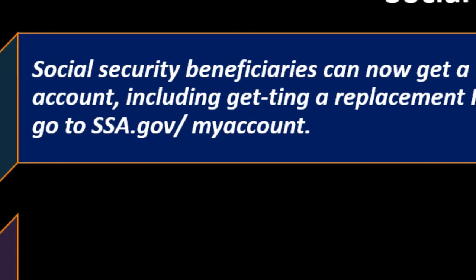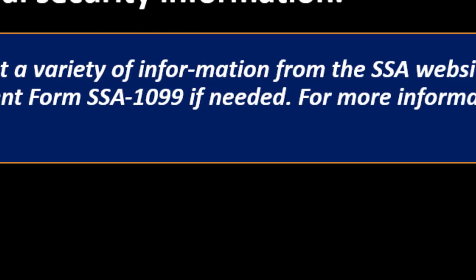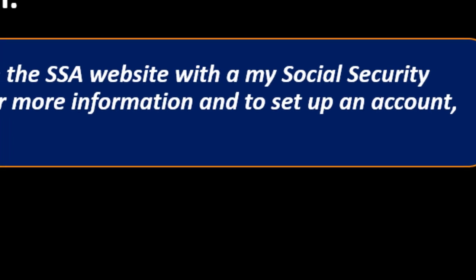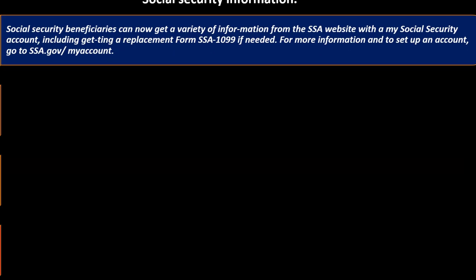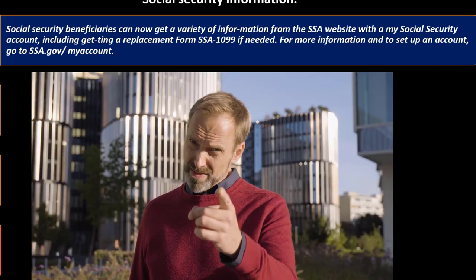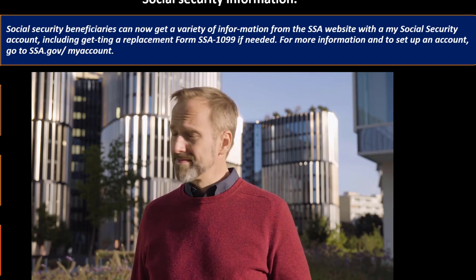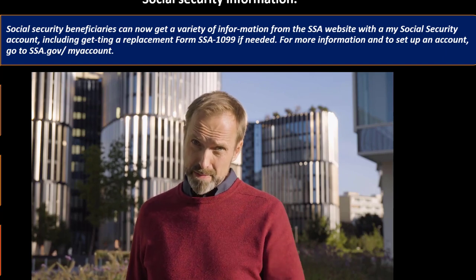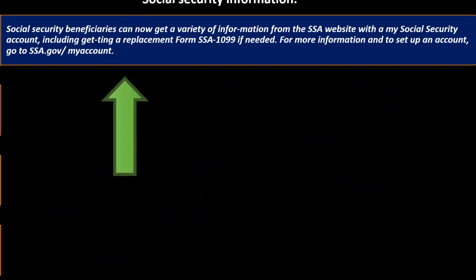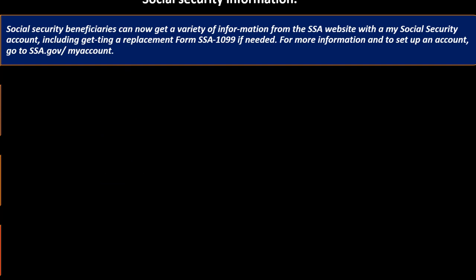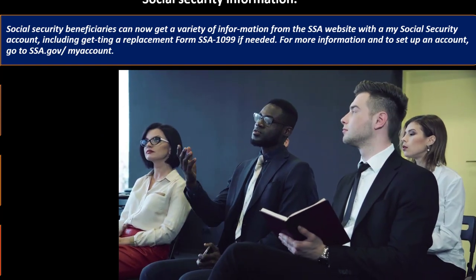Social security information: social security beneficiaries can now get a variety of information from the SSA website. That's where you'd want to dig in if a client has questions. A lot of times tax software will tell you as part of tax planning if someone is getting close to being able to claim social security, which you might mention as an added benefit to preparing their taxes. And you're going to inevitably get questions about when should they be claiming social security.